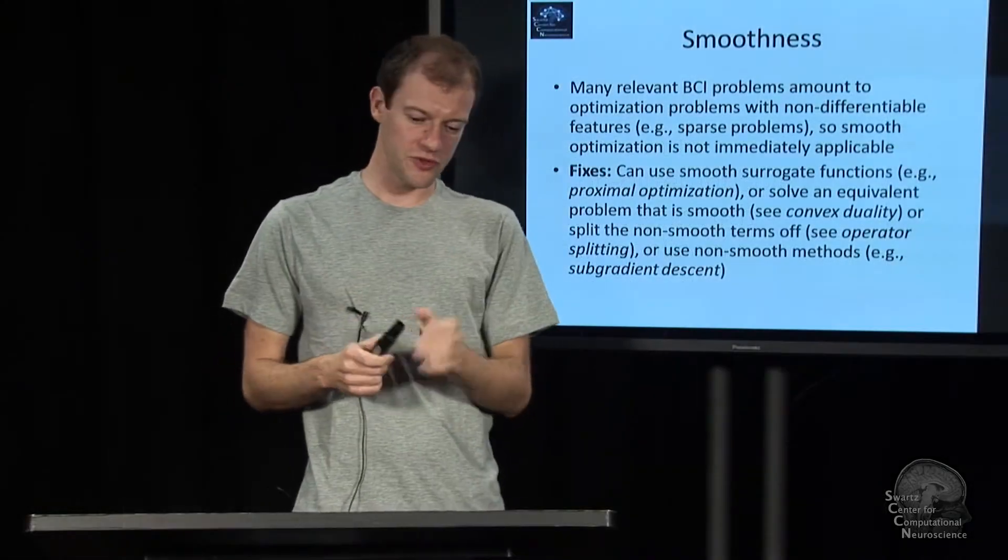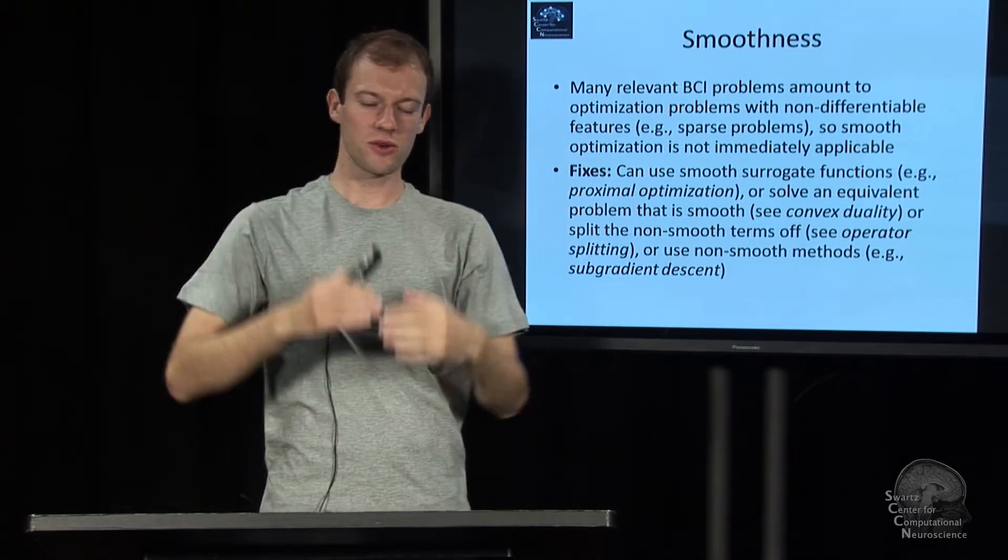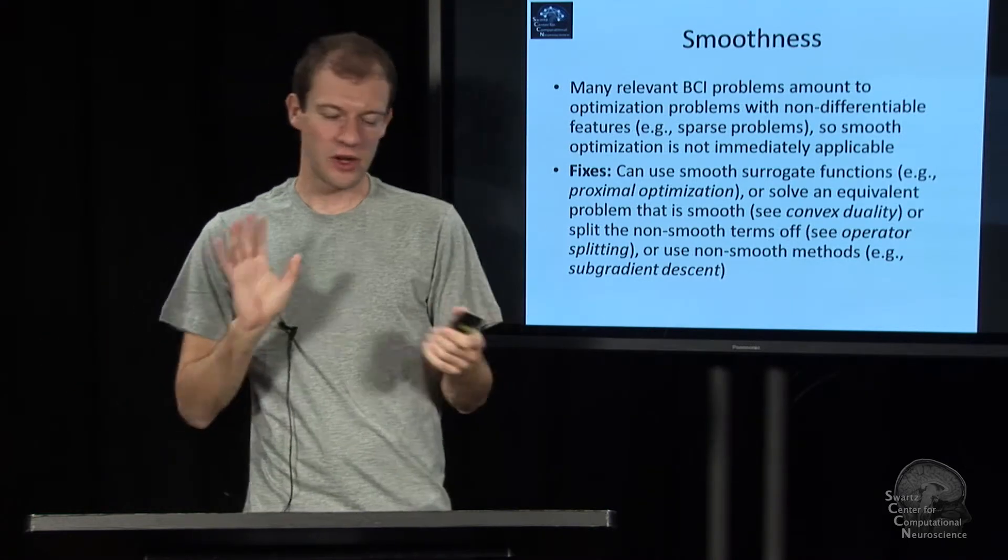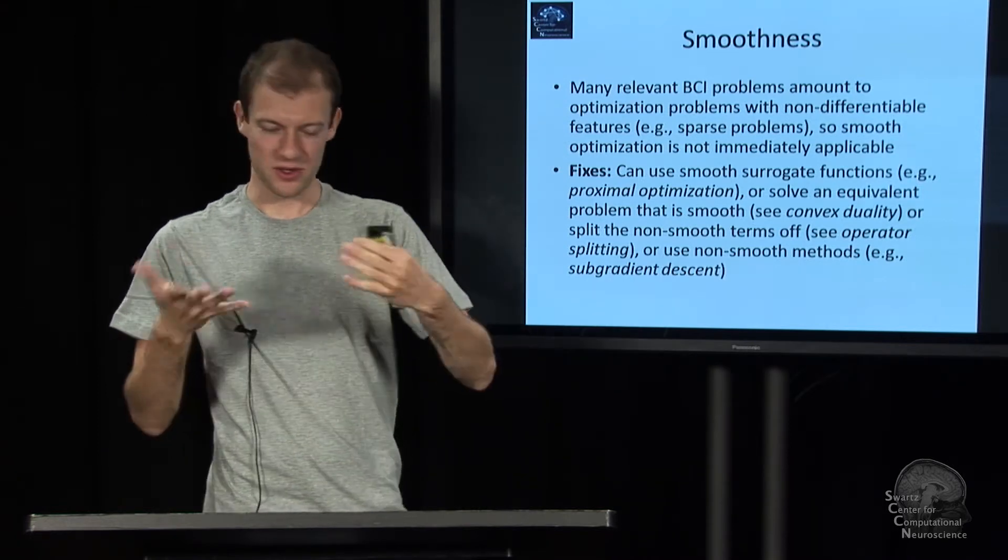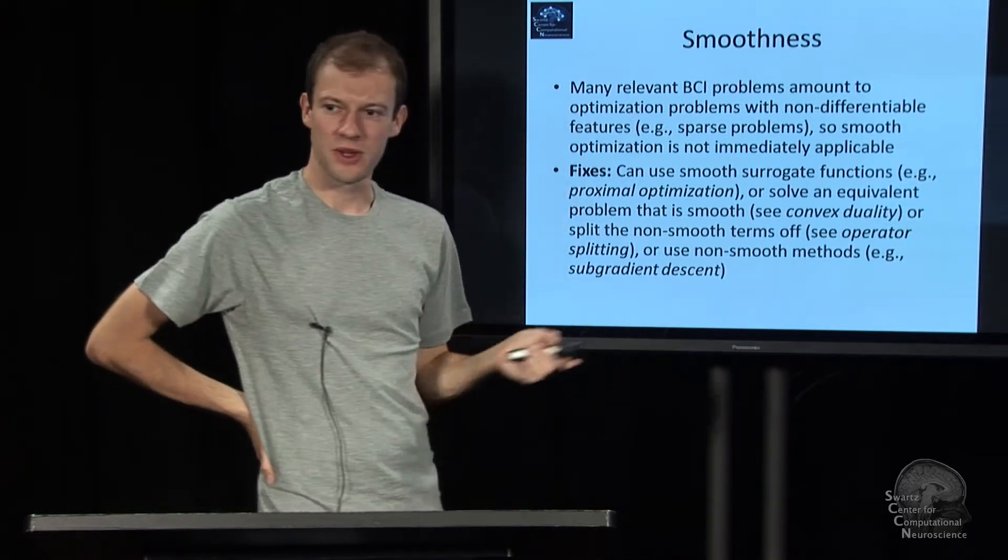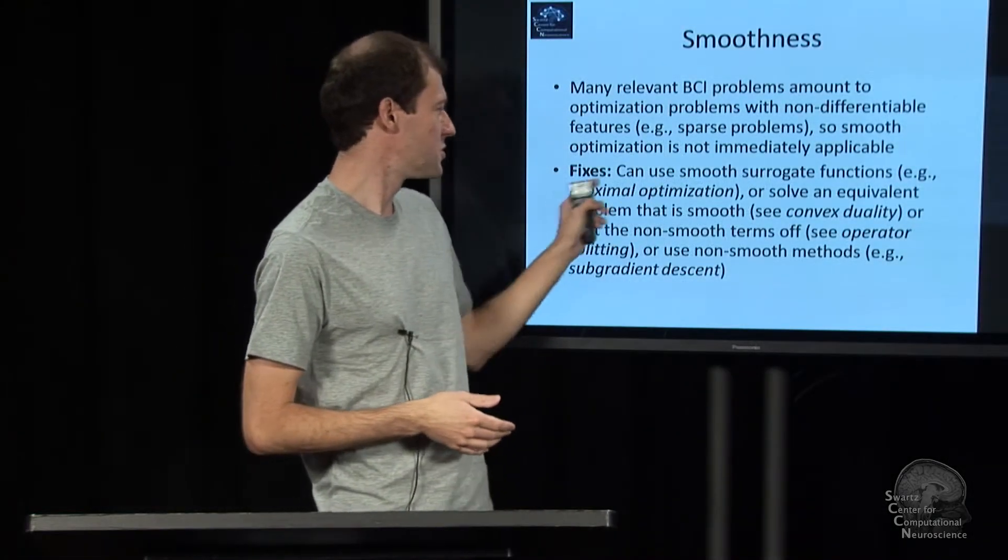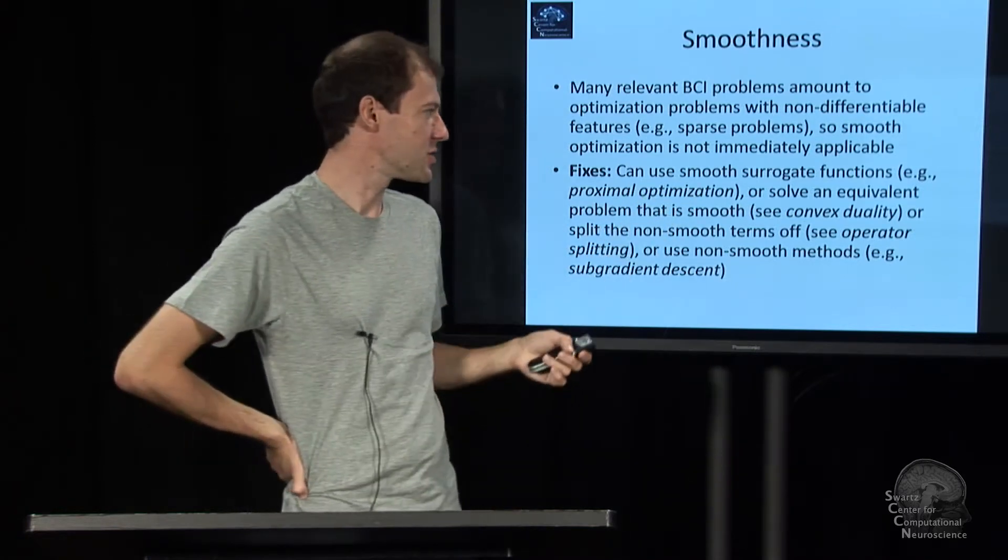If they are not differentiable, such as absolute value, then gradient descent as it comes doesn't necessarily work. There are alternatives to deal with that. One fix is to use a surrogate for that cost function where the non-smooth parts are actually smoothed out. There's a whole framework invented by Nesterov which relates to proximal optimization to come up with smooth versions of your cost function. The other one is in some cases there's alternative problems that if you manage to optimize, you can also solve the original problem which happened to be smooth.